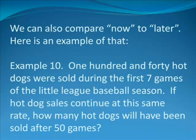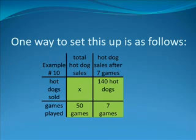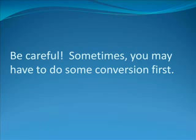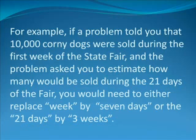Example 10. One hundred and forty hot dogs were sold during the first seven games of the Little League Baseball season. If hot dog sales continue at this same rate, how many hot dogs will have been sold after 50 games? One way to set this up is as follows. We're looking for total hot dog sales after 50 games. That should be our second column title. Hot dog sales after seven games, our reference amount, will be our column title for the third column. Our second row title is Hot Dogs Sold. Our reference is 140 hot dogs sold. The third row is games played. That's 50 games in column two, and seven games in column three. The second column is later. The third column is now. Be careful. Sometimes you may have to do some conversion first, which is another ratio-proportion problem, as we showed earlier.